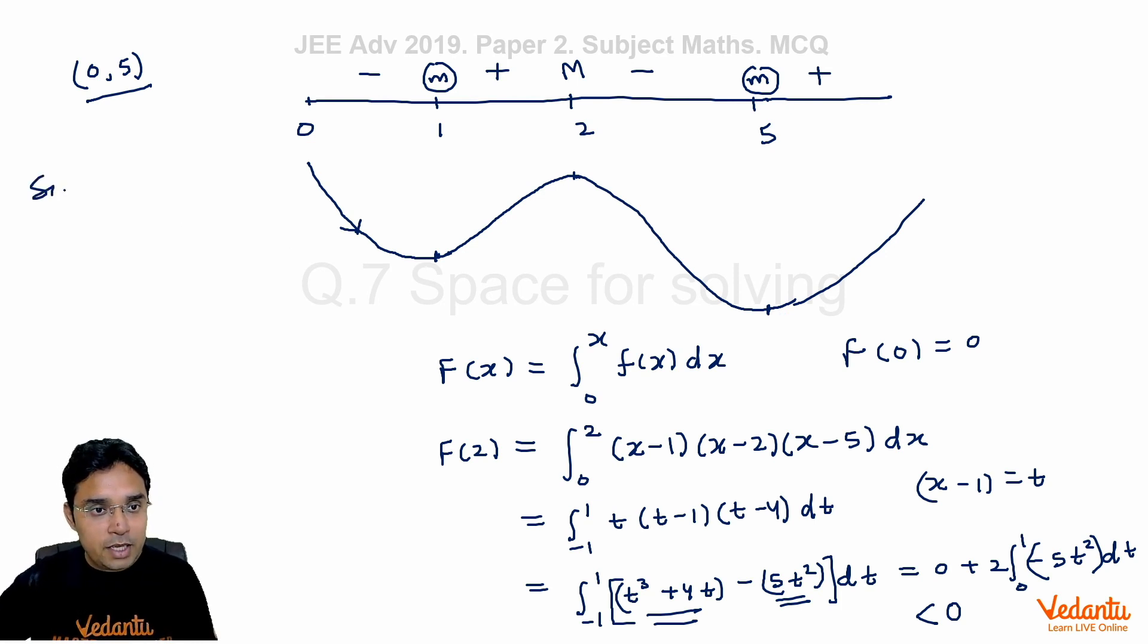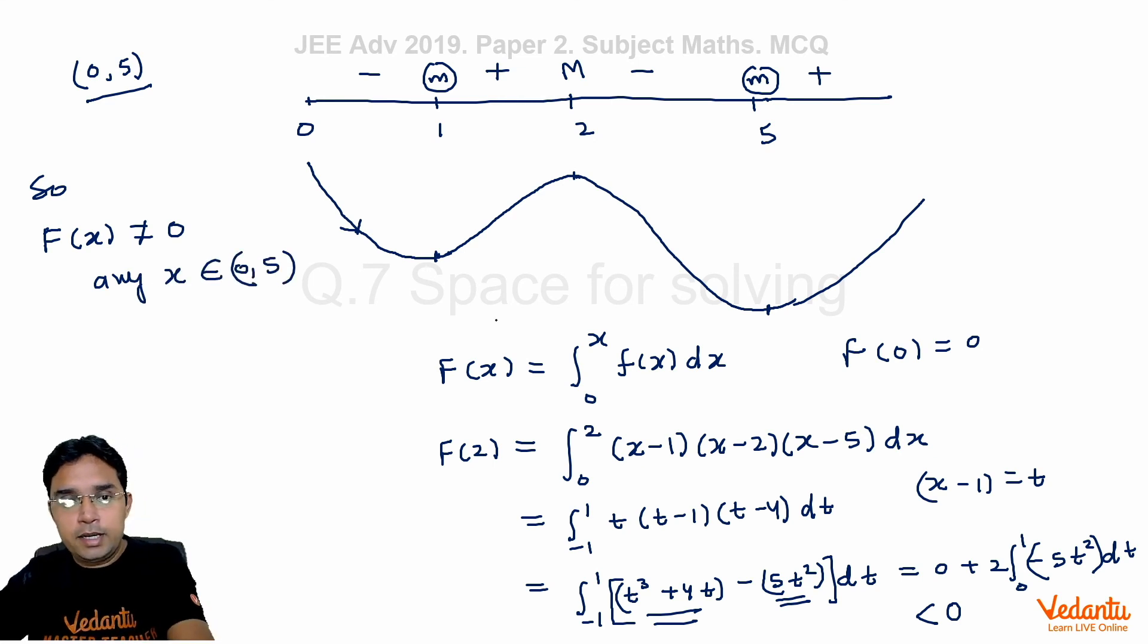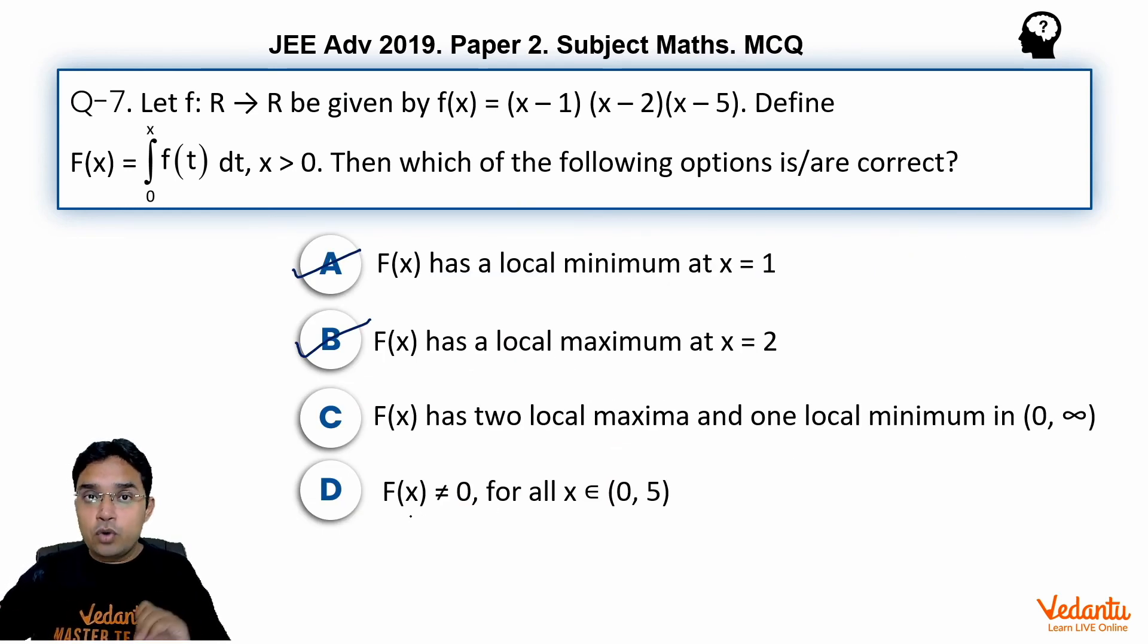And after 2 it will again start decreasing, so up to 5 it will be negative only. So I can now say that this F(x)—not small f, it is actually capital F—which will not be equal to zero for any x that belongs to (0, 5).